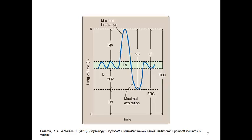Let's look at lung capacities. The sum of all four lung volumes — inspiratory reserve volume, tidal volume, expiratory reserve volume, and residual volume — equals the total lung capacity, which approximates 6 liters in a normal individual. Vital capacity is the sum of tidal volume, inspiratory reserve volume, and expiratory reserve volume, and is really the maximum tidal volume achievable — the biggest breath one can take. Forced vital capacity, or FVC, is the volume of air that can be forcibly expired after maximal inspiration, which is what we measured in the lab.